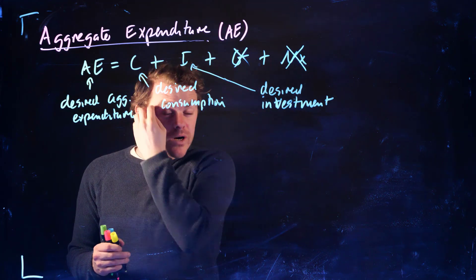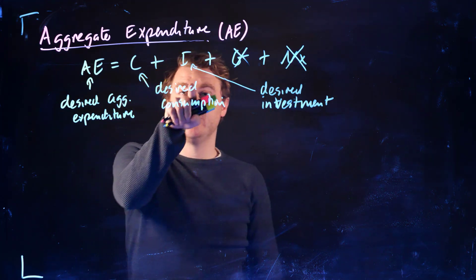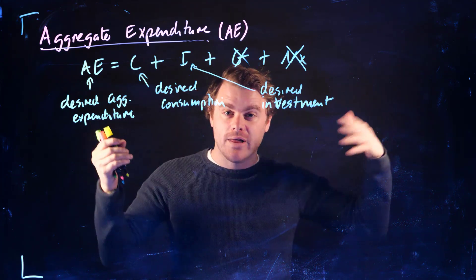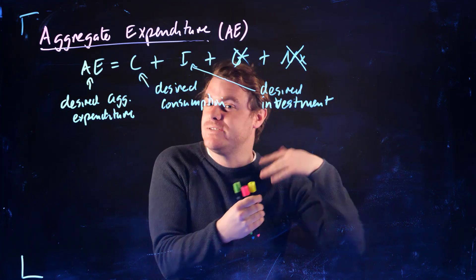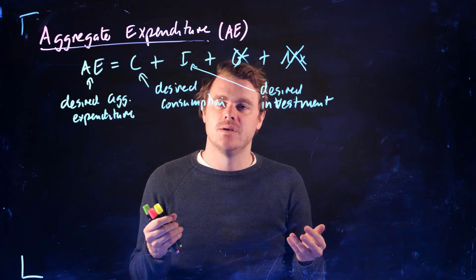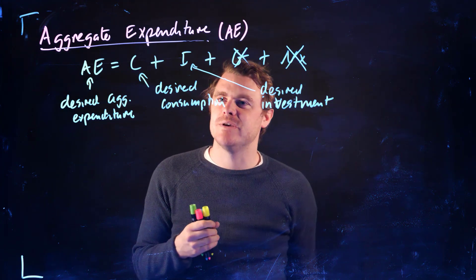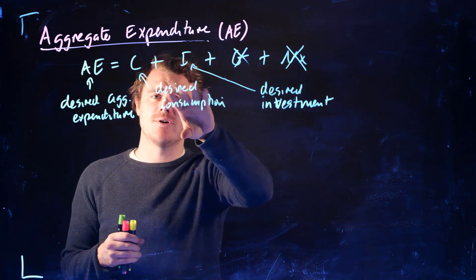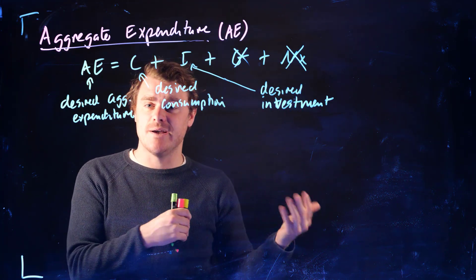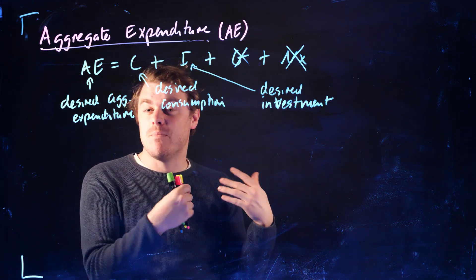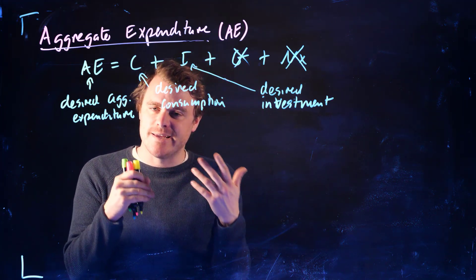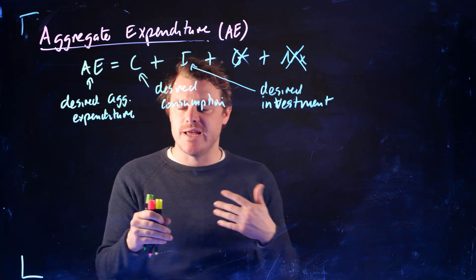And so what we're going to do next is go through these two categories and talk about what might they look like theoretically in terms of what's determining people's desired level of consumption in our economy. We're going to have a really simple view of investment, but we're going to spend a little bit more time on consumption. We're going to go through these categories and think about what's going to affect them, how we might model them in the simplest way. And then we can start talking about equilibrium and then changes in equilibrium.